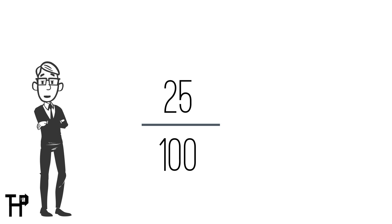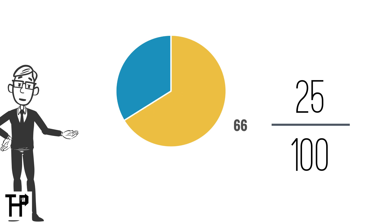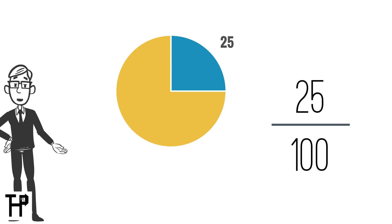This right here is a very basic fraction, 25 over 100. With this fraction and all fractions, the number on the bottom is the whole number or the entire piece, whereas the top number is only part of the entire piece.